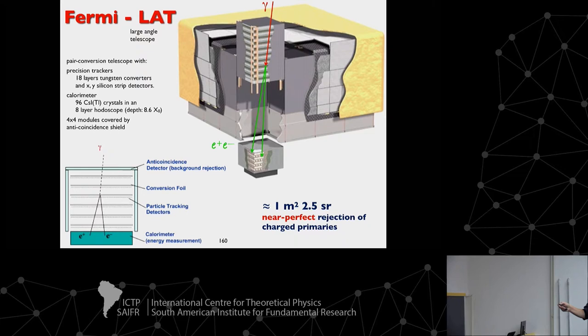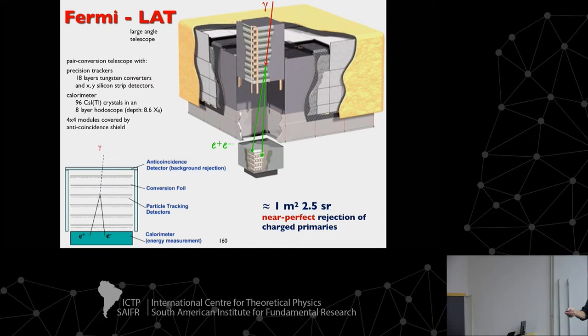The Fermi satellite was launched in 2008 — very much the same concept, using pair production, but now with silicon strip detectors instead of lead or tungsten plates with gas chambers. There are also gamma ray burst monitors. It is big compared to others, and we are meanwhile above 5,000 sources and 5,000 gamma ray bursts. Here is a cut through: the photon comes in, converts into a pair, the pair is tracked, and the energy is measured in the calorimeter. Around the main detector are anti-coincidence detectors — a veto. If a charged particle comes in, it makes a signal in those outer detectors and we know it was a cosmic ray. There is no way a cosmic ray can get in without leaving a trace in these anti-coincidence shields. This gives perfect rejection of charged primaries — only events where nothing is seen in the veto are photon candidates, since a photon doesn't leave a trace until it creates a pair.